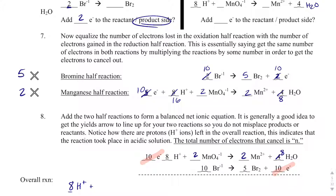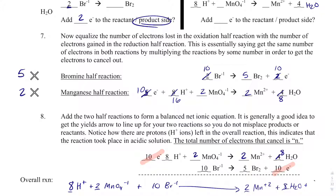So the overall reaction is: 16 H⁺ plus 2 permanganates plus 10 bromides goes to 2 Mn²⁺ plus 8 waters plus 5 Br₂.